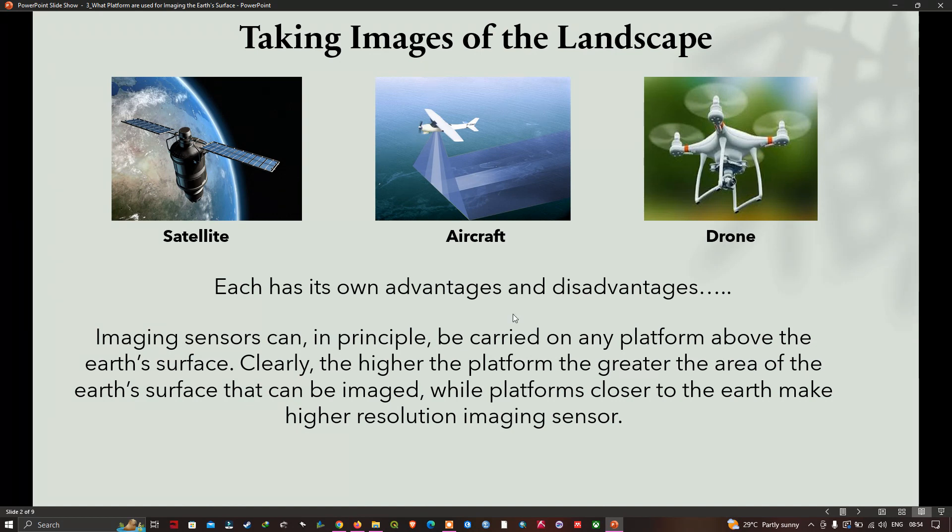Each of the platforms has its own advantages and disadvantages. We have three different platforms: satellite, aircraft and drone. The satellite can cover the entire globe compared to aircraft and drone which cover only a specific region of interest. Imaging sensors can in principle be carried on any platform above the earth's surface. Clearly, the higher the platform, the greater the area of earth's surface that can be imaged, while platforms closer to the earth make higher resolution imaging sensors possible.